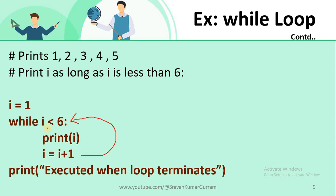After incrementing i, control is redirected back to the while statement. i becomes 2; 2 < 6 is true. Again it enters the loop body, prints i, and i becomes 3. With the new value, the condition of the while loop is checked again, it becomes true, and these two statements execute again, and so on. When i becomes 7, the condition becomes false — 7 < 6 — so it exits the while loop. The statements outside the while loop, whose indentation equals the while statement's indentation, will then be executed when the while loop terminates.